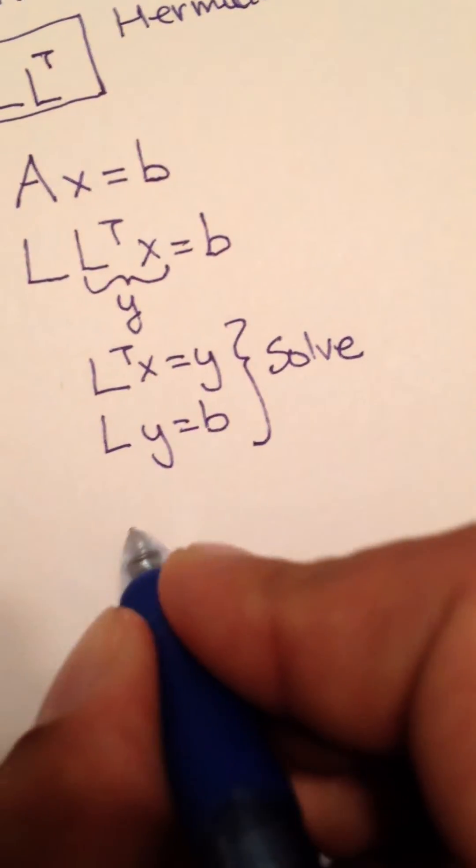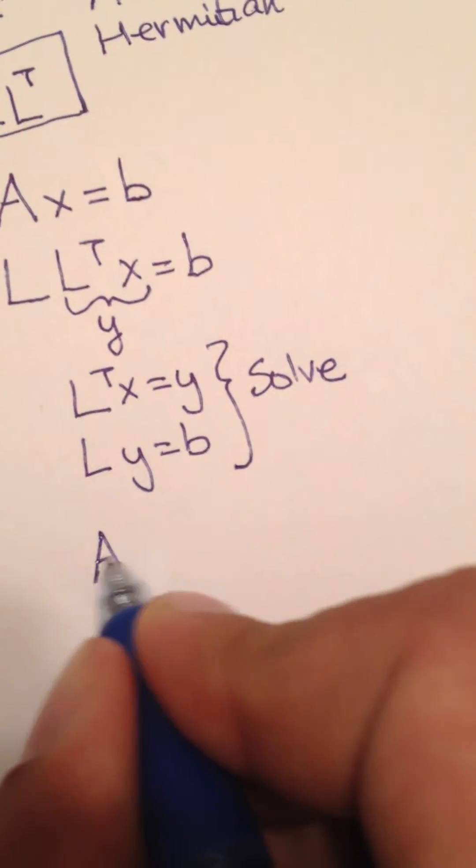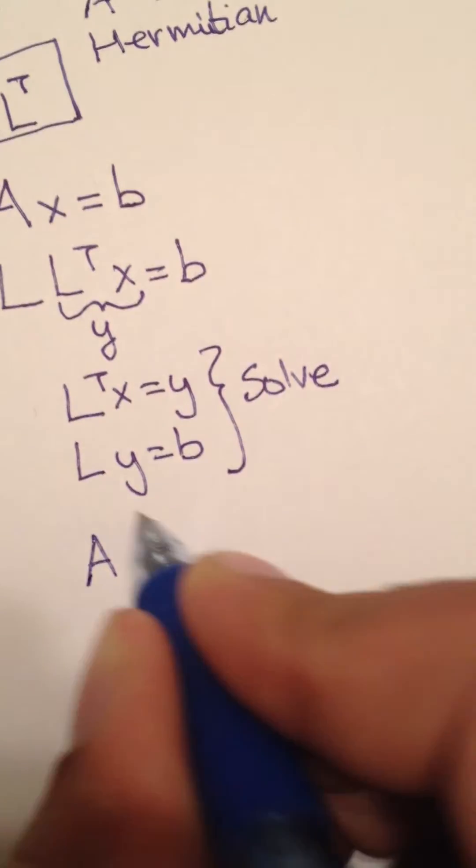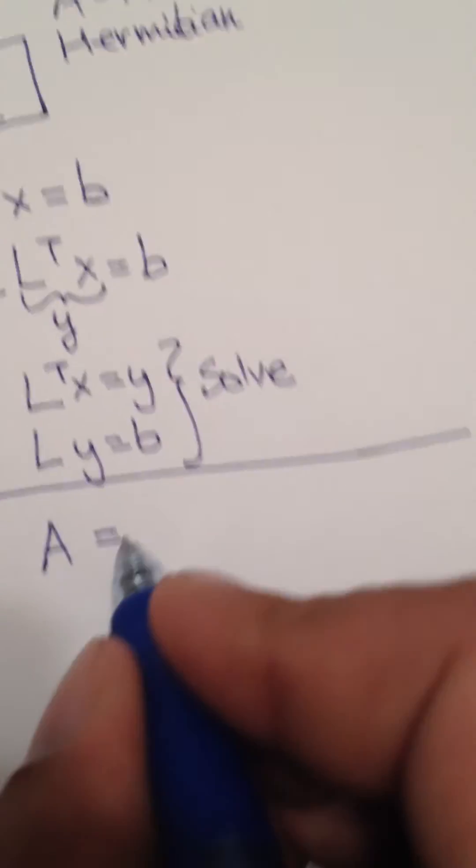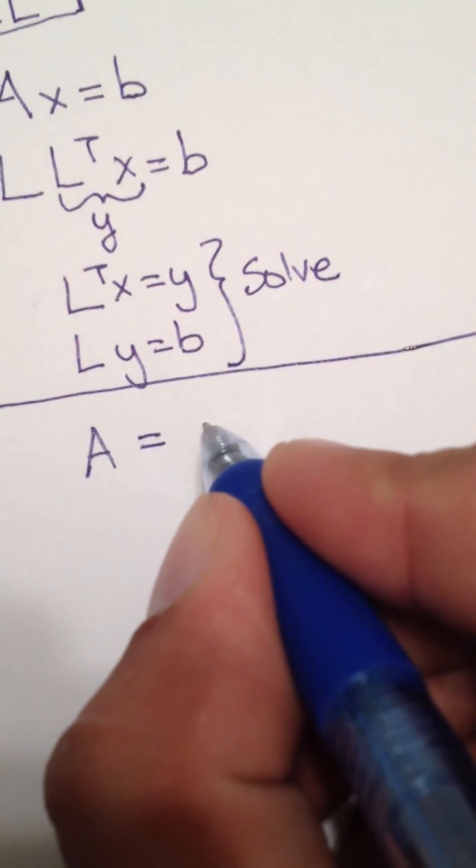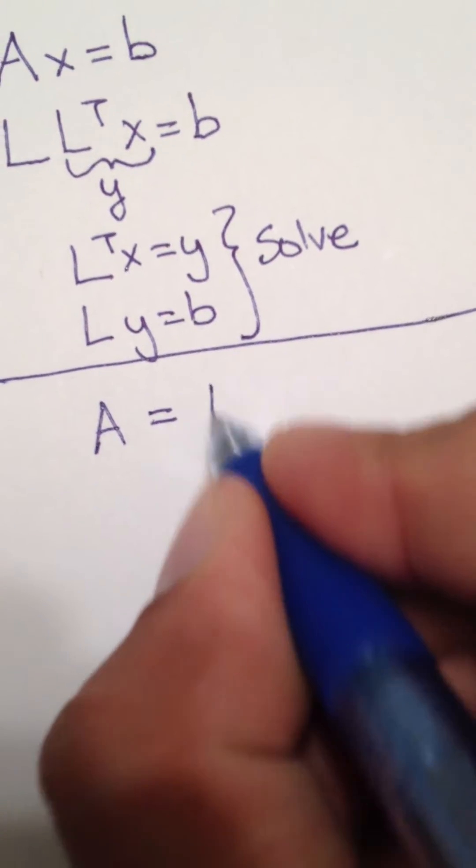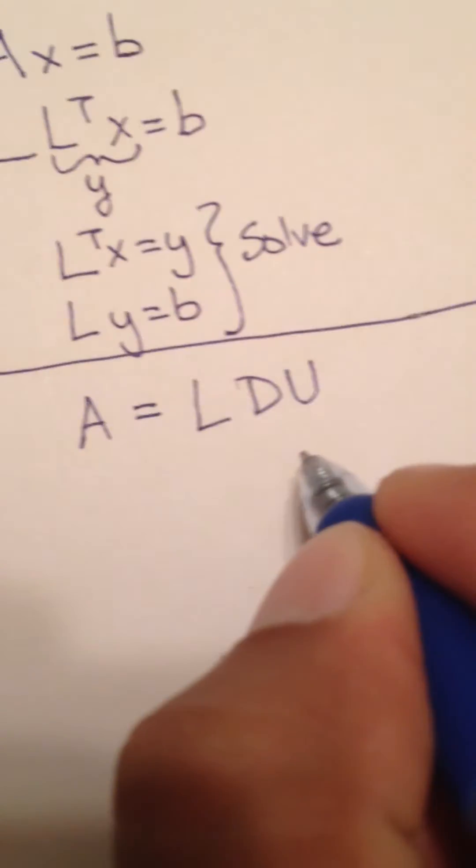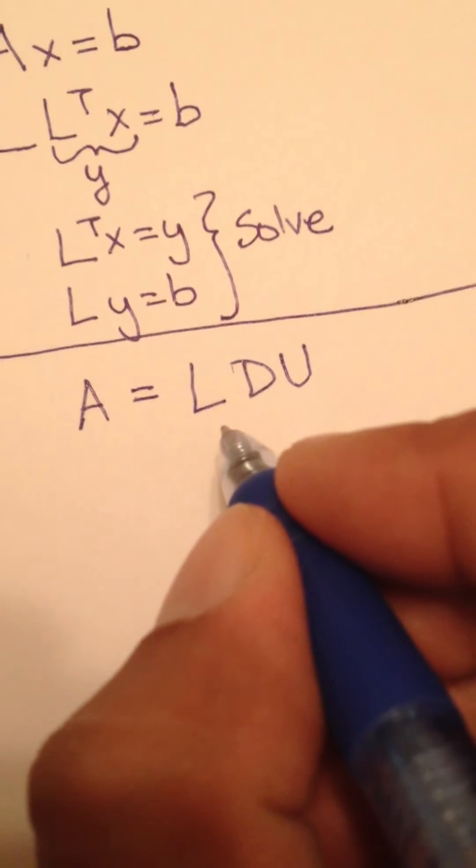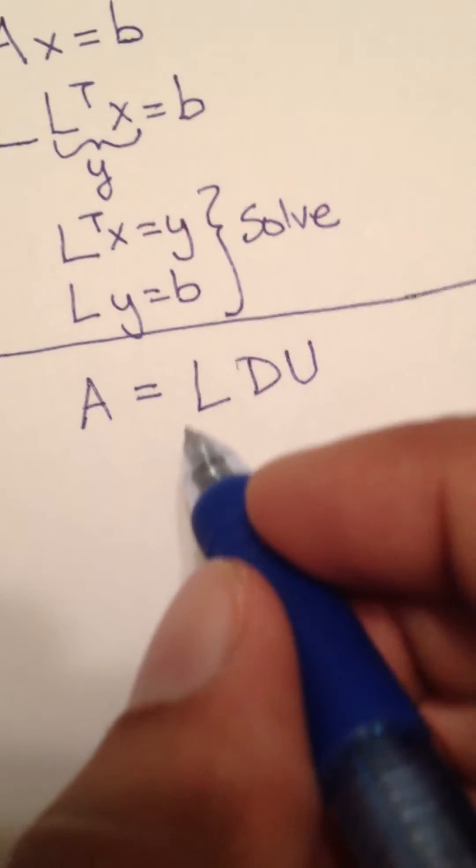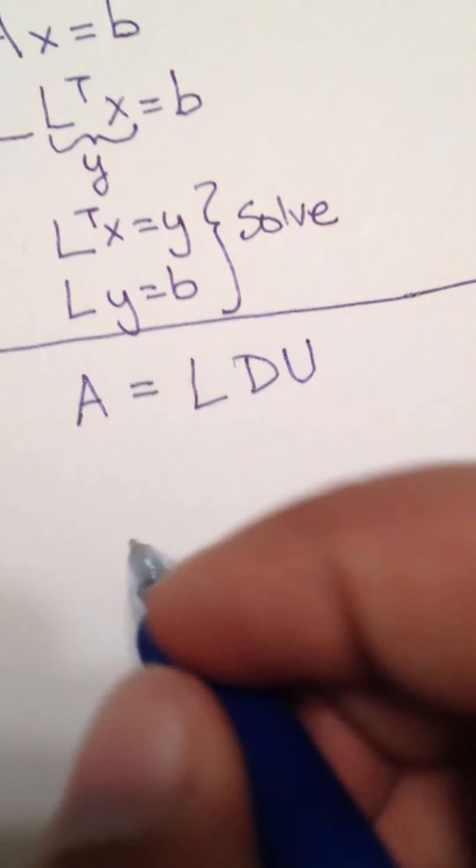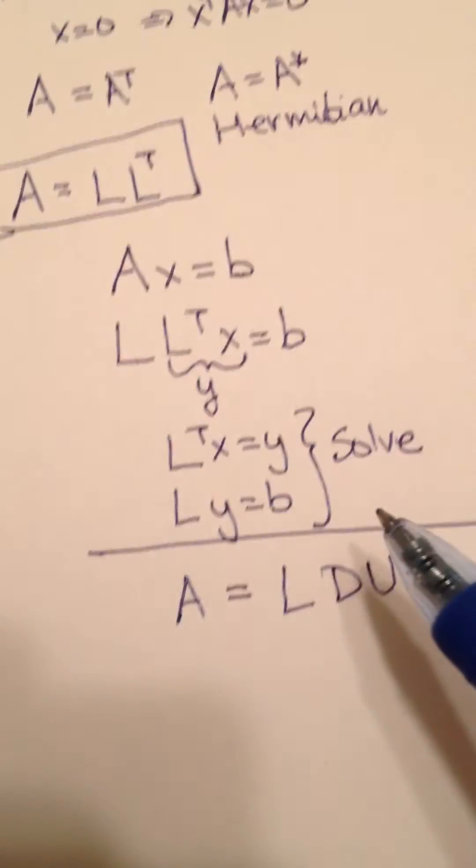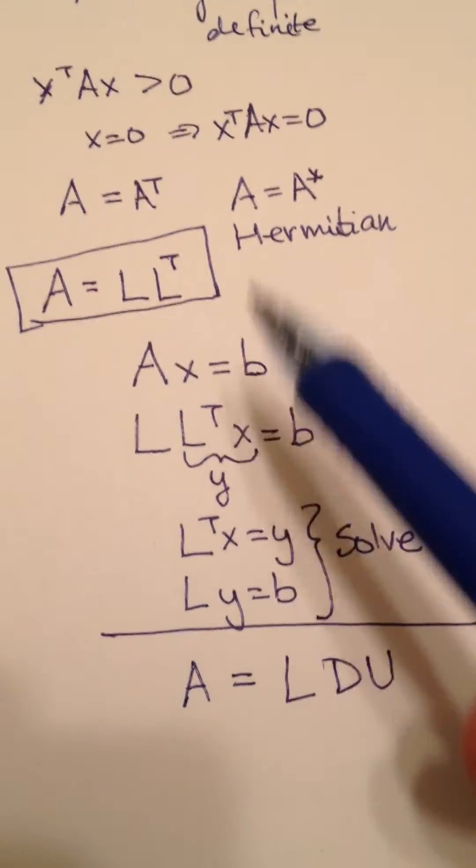So let's say that you have this matrix A, which can be factored into its usual L D U factorization. This you can do for a more general case than the Cholesky case.